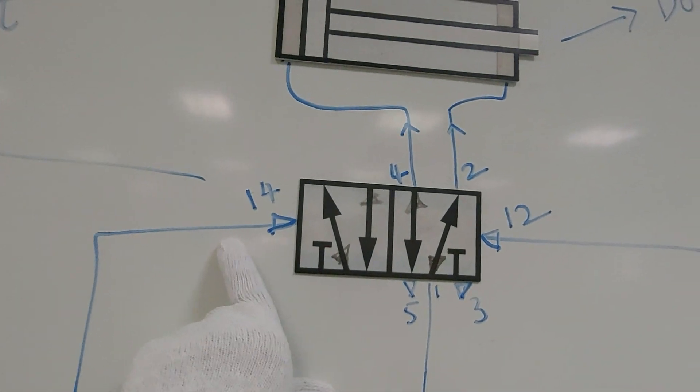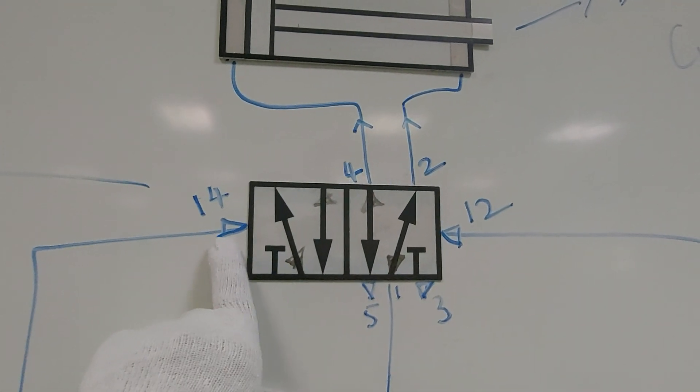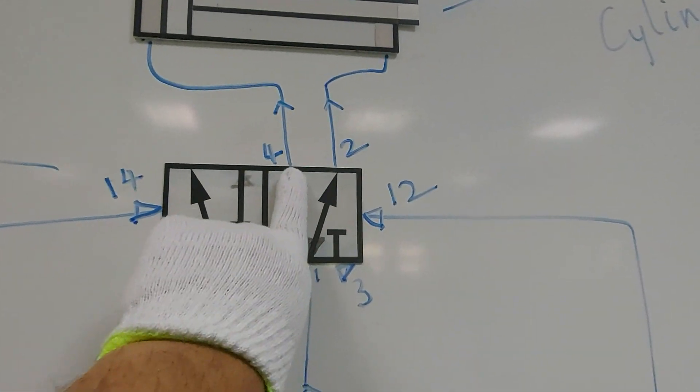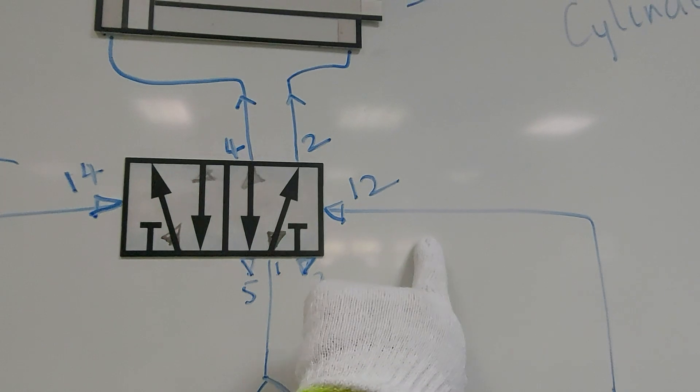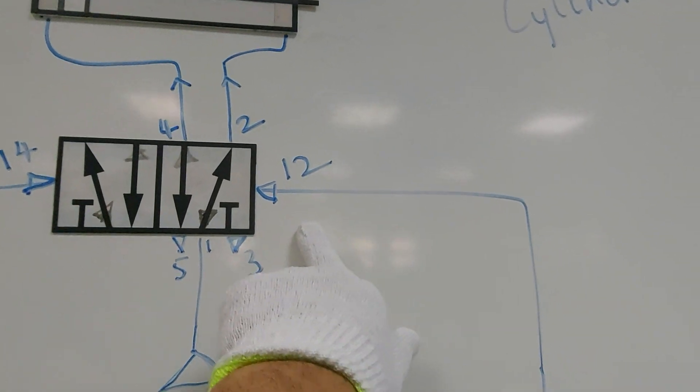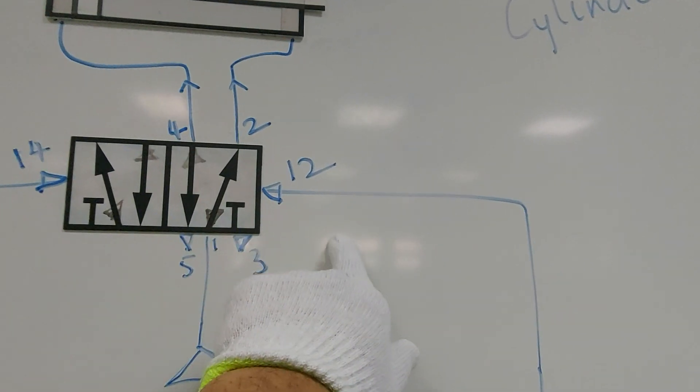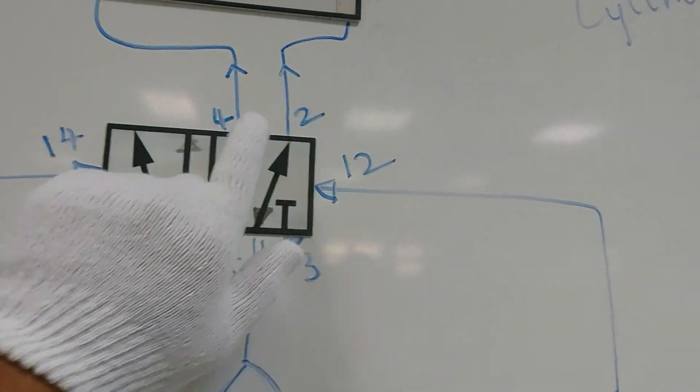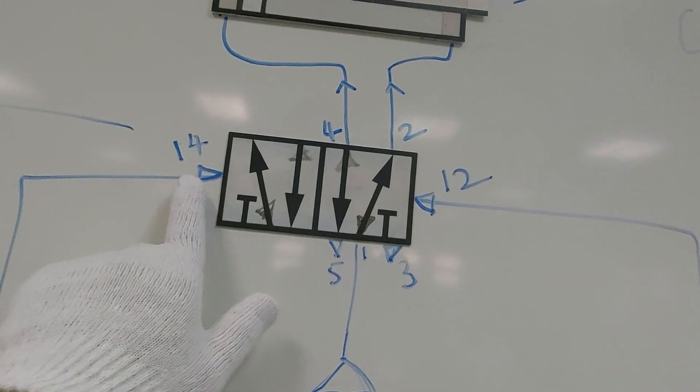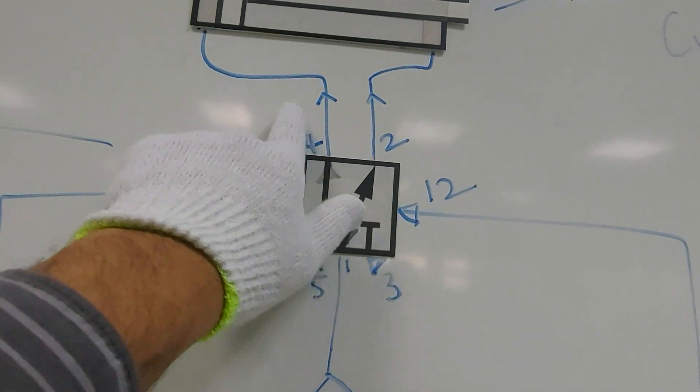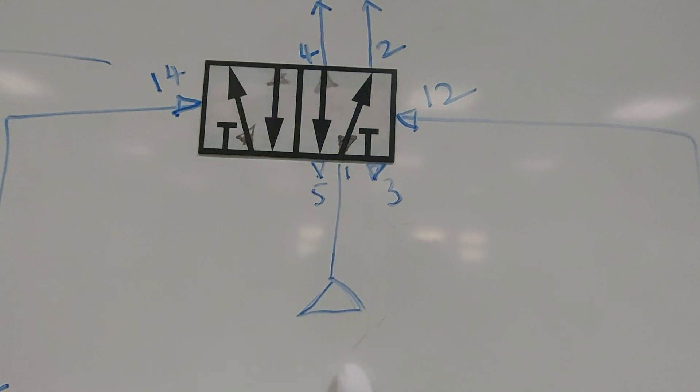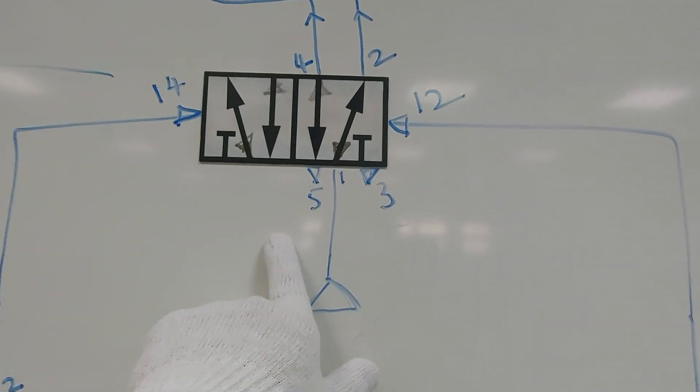So you see this arrow. The air will come from here and it will activate this side. And air from here, it will activate this side. So the air 1-2 will activate the port 2. Air from the port 1-4 will activate the port 4. 1 is as usual from distributor. 3 and 5 are exhaust.